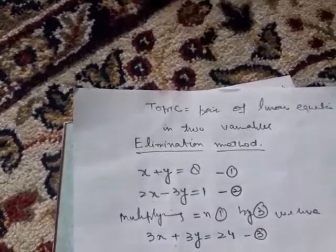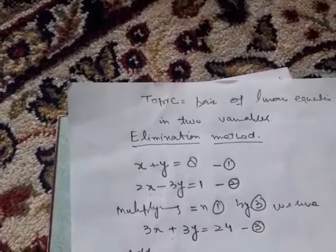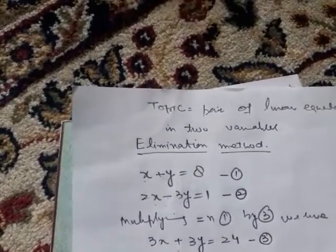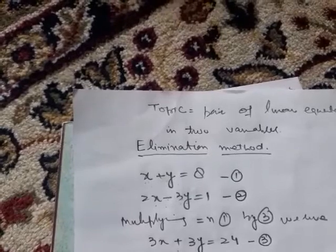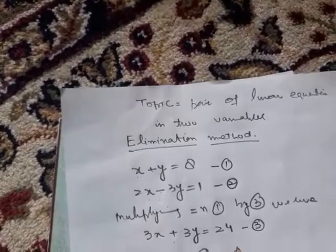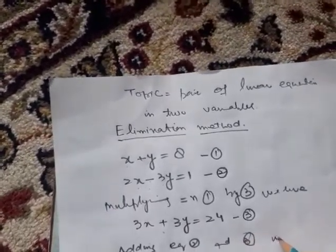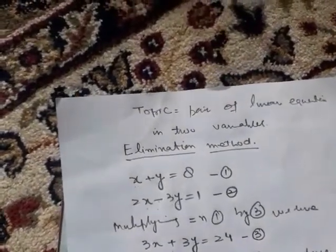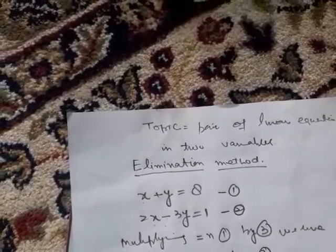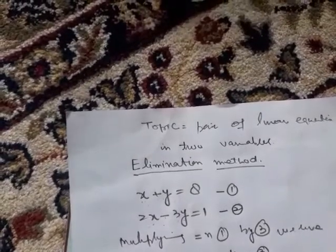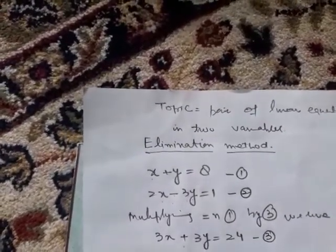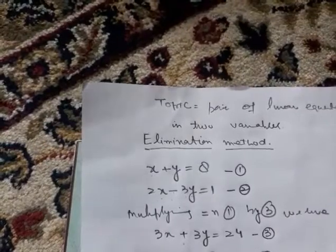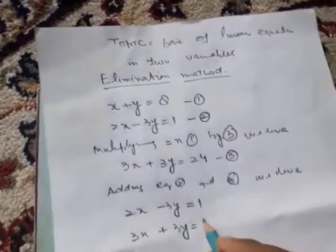Just adding equations second and third, we have: 2x minus 3y equals 1, and 3x plus 3y equals 24.